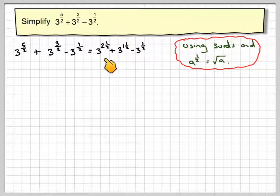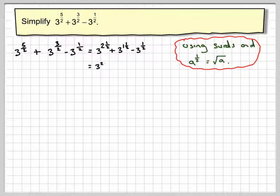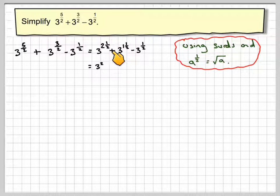So in the first one here, we're going to have 3 squared times 3 to the half, which is square root of 3.